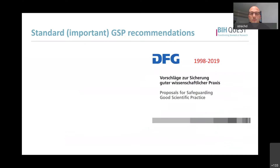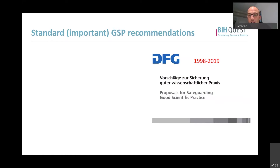It is helpful to understand what good scientific practice was about - and still is about - for more than 20 years. For example, in Germany, the term 'good scientific practice' was much more broadly established after the German Research Foundation published, for the first time, their guidelines for good scientific practice in 1998. They also called them proposals for safeguarding good scientific practice. They highlighted many recommendations, and several of them you will also hear more about today.